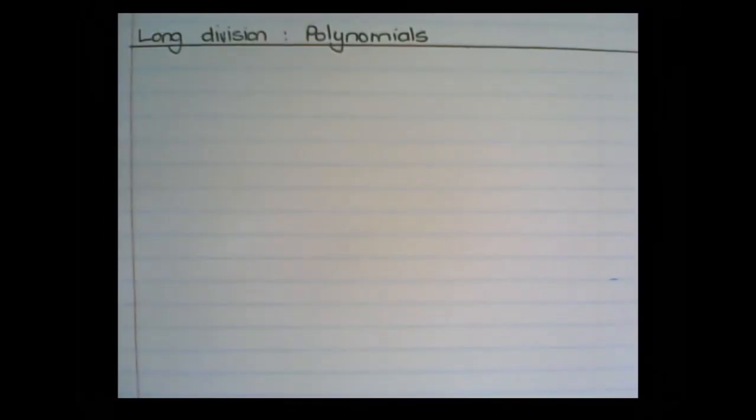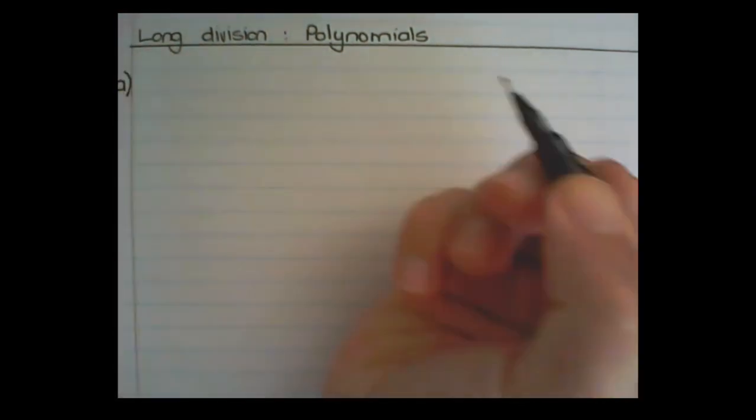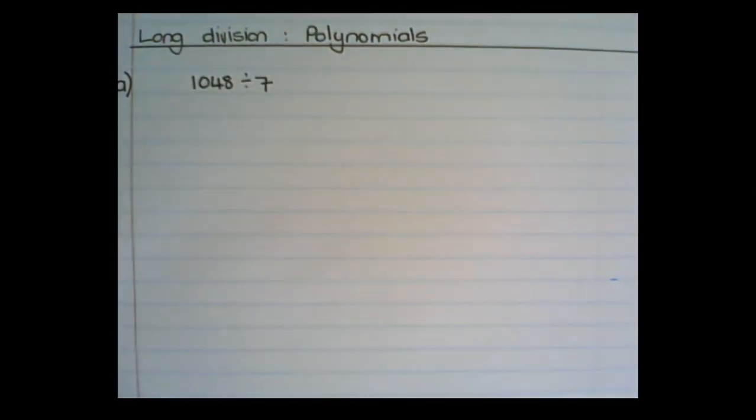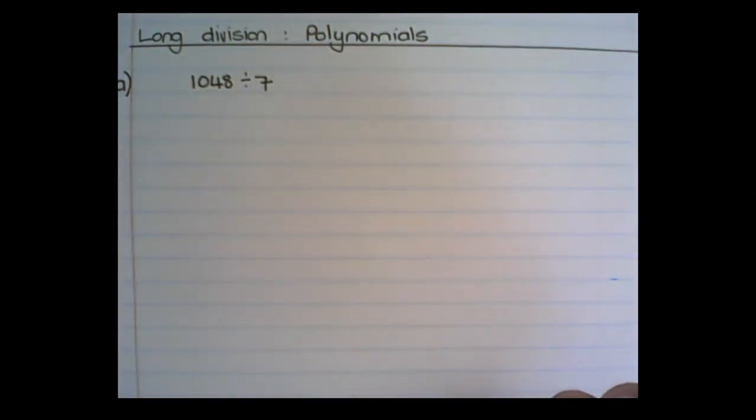In this video, we are going to do some long division with polynomials. But before we start with variables, let's just revise what long division is. If I say I want to divide 1048 by 7, this is the steps I would take in long division.